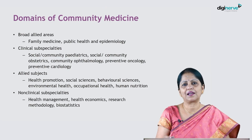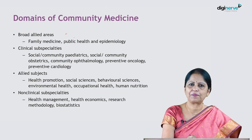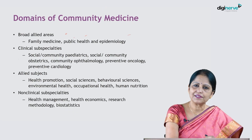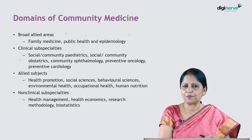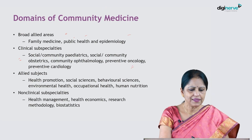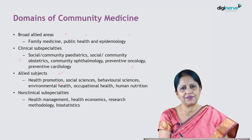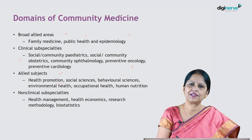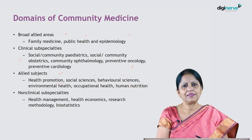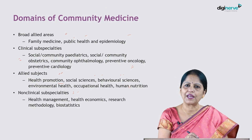Community medicine is a vast discipline with several domains. The broad allied areas include family medicine, public health, and epidemiology. There are clinical sub-specialties like social or community paediatrics, community obstetrics, community ophthalmology, preventive cardiology, preventive oncology, etc. Allied health-related subjects include health promotion, social sciences, behavioral sciences, human nutrition, environmental health, and occupational health. Non-clinical sub-specialties also under community medicine include health management, health economics, research methodology, and biostatistics.